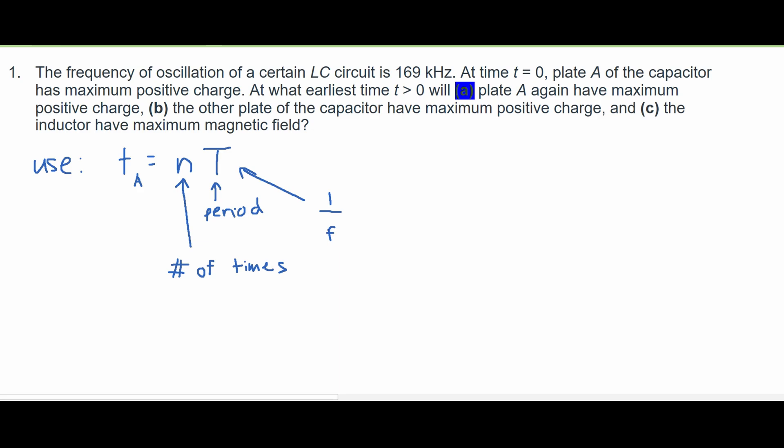Or we could say that frequency is 1 over the period. Now that we have this, we can solve. Solving for this, we'll write that our T of A is equal to N. And our N here is just going to be 1.